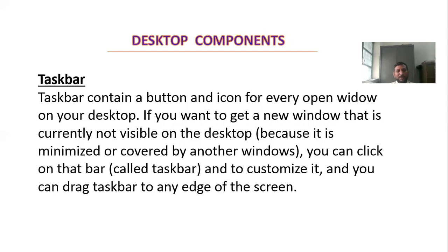The taskbar contains a button and icons of every window on your desktop. If you want to get to a window that is currently not visible on the desktop because it is minimized or covered by another window, you can click on the taskbar. You can also customize it and drag the taskbar to any edge of the screen. The taskbar is the bar at the bottom of the screen — you can see the blue bar with the Start button on the left side.